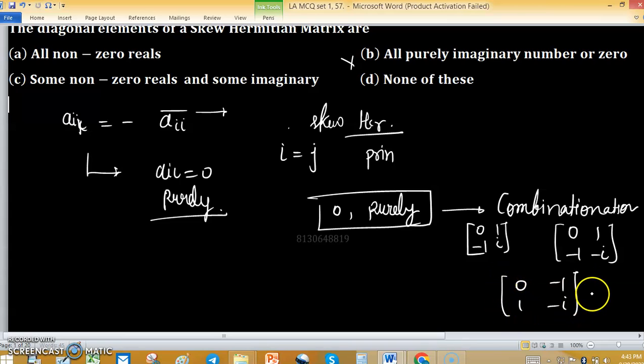Now take negative of elements: negative 0, 1, minus 1, iota. So diagonal elements may be 0 or purely imaginary combinations.